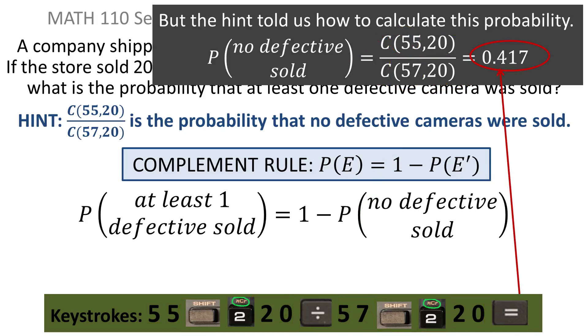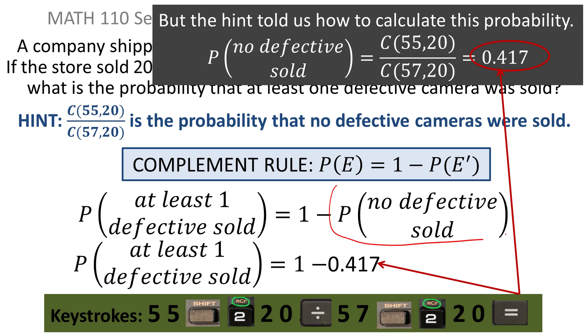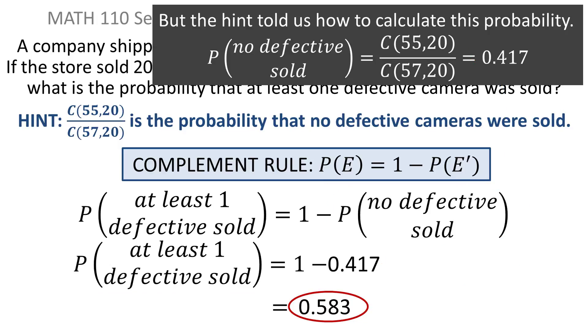And that will give you 0.417. And that's the value that you want to put in here. So you end up with 1 minus 0.417, which is 0.583. That's the probability of at least one being defective sold.